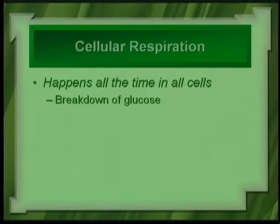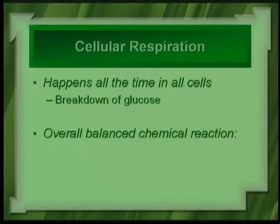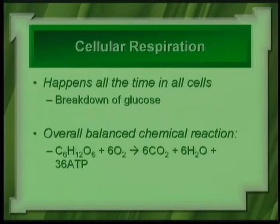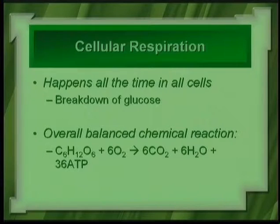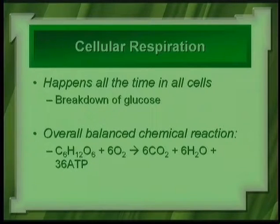Cellular respiration is a breakdown of the glucose molecule. The overall balanced chemical reaction for aerobic cellular respiration: glucose (C₆H₁₂O₆) plus six oxygen molecules, through glycolysis, the Krebs cycle, and electron transport chain, yields six carbon dioxide molecules, six water molecules, and 36 ATP — anywhere between 32 to 39, but usually we say 36 ATP.